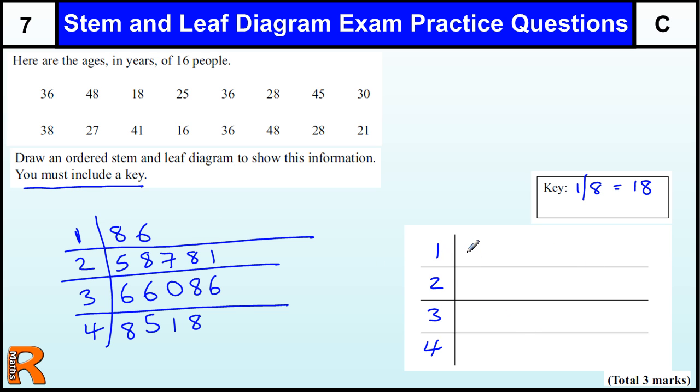And then we just put them in order. So we've got an 8 and a 6. So 6 comes first, then 8. And then this one we've got 1, followed by 5, followed by 7, followed by 2 8s. And then in the 3s, the 30s, we've got a 0, a 6, a 6, another 6, and an 8. So I'm keeping them nice and vertical lines. A 1, a 5, an 8, and an 8. And that's three marks.